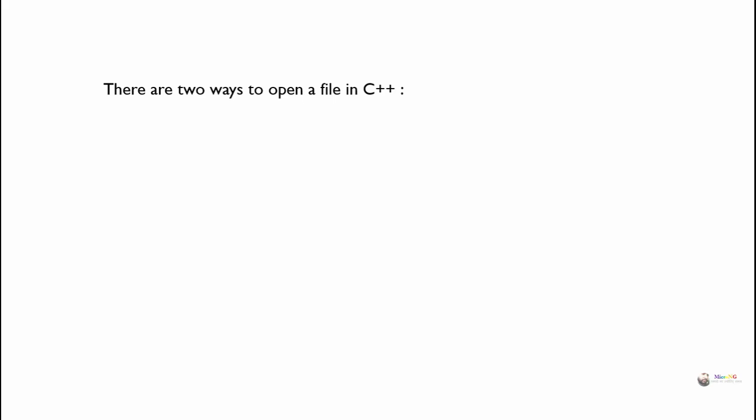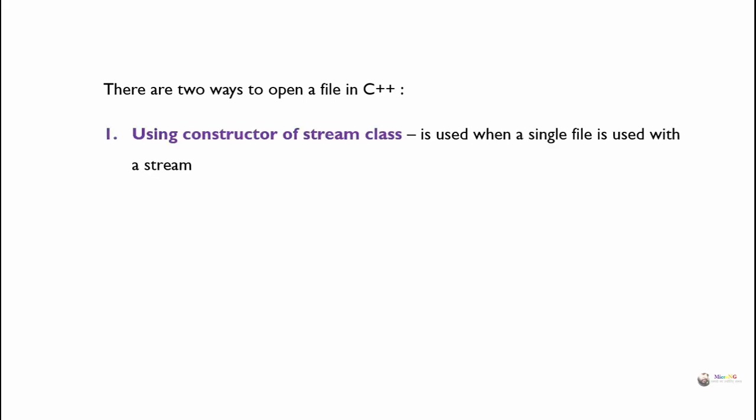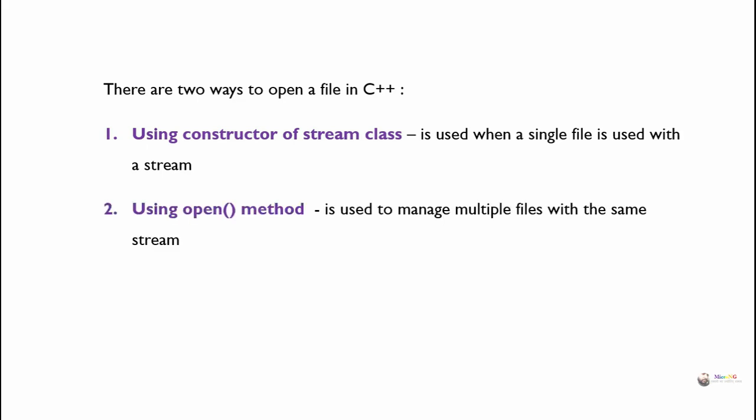There are two ways to open a file in C++. Using the constructor of the stream class is used when a single file is used with a stream. Using the open method is used to manage multiple files with the same stream.